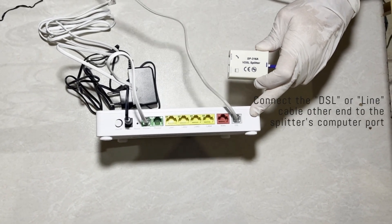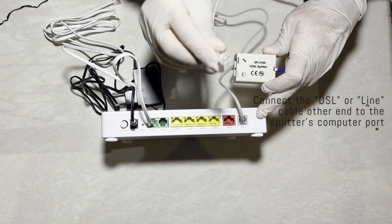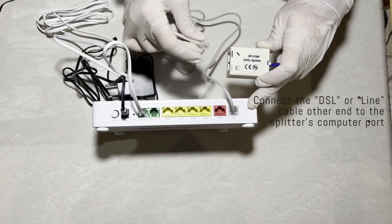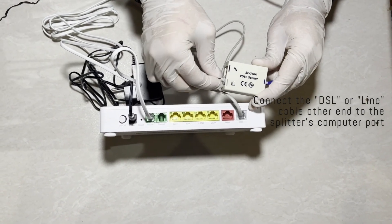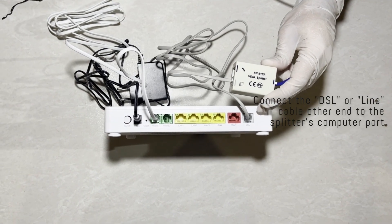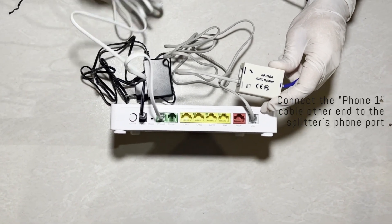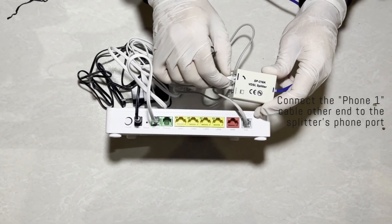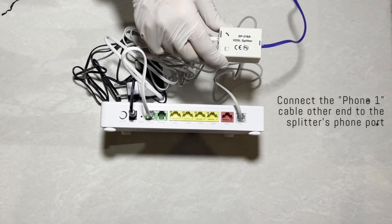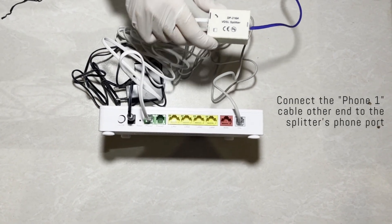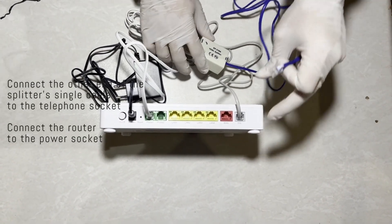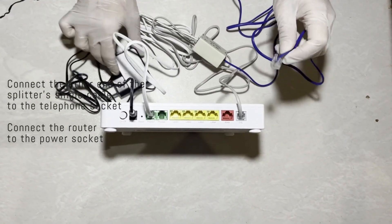Connect the DSL or line cable other end to the splitter's computer port. Connect the phone one cable other end to the splitter's phone port. Connect the other end of the splitter's single cable to the telephone socket.